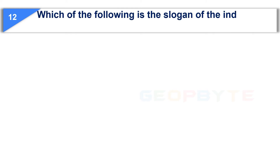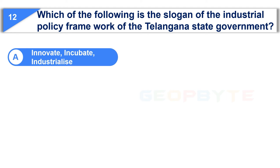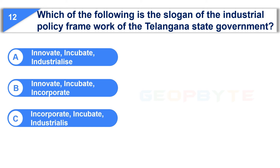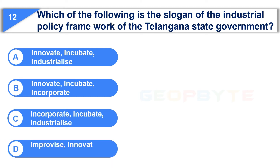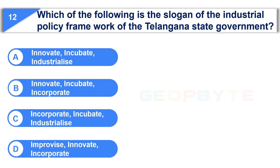The twelfth question is: The industrial policy framework of the Telangana state government — Option A: Innovate, Incubate, Industrialize. Option B: Innovate, Incubate, Incorporate. Option C: Incorporate, Incubate, Industrialize. Option D: Improvise, Innovate, Incorporate. And the correct answer is Option B: Innovate, Incubate, Incorporate.